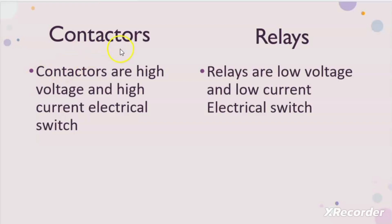The first difference between the contactors and relay is that contactors are high voltage and high current electrical switches, whereas relay is a low voltage and low current electrical switch. Contactors can deal with higher voltage up to 690 volts, but relay we are finding till 230 volts maximum. Contactors can deal with current at a higher level, but relay can work till a lesser ampere of current.